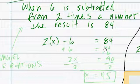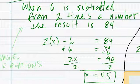Alright, so that's pretty straightforward. All we have to do is move the 6 over. So we add 6 on this side, and we add 6 on this side. 84 plus 6 is 90, equals 90. So 2x equals 90. Divide by 2 on both sides. x equals 45.